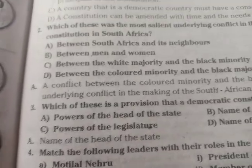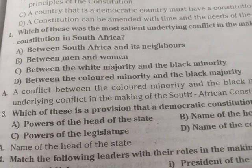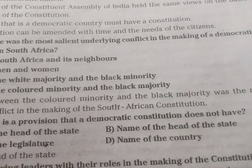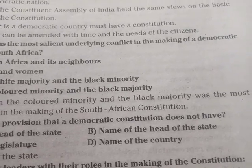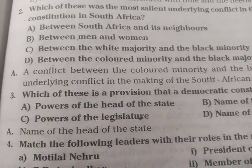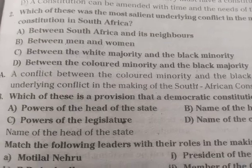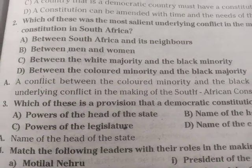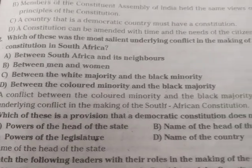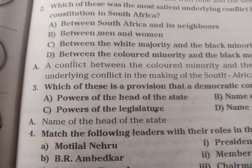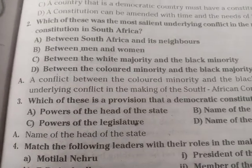Question: Which of these is a provision that a democratic constitution does not have? A. Powers of the head of the state. B. Name of the head of the state. C. Powers of the legislature. D. Name of the country. Answer: B — Name of the head of the state. A democratic constitution does not typically specify the name of the head of the state.